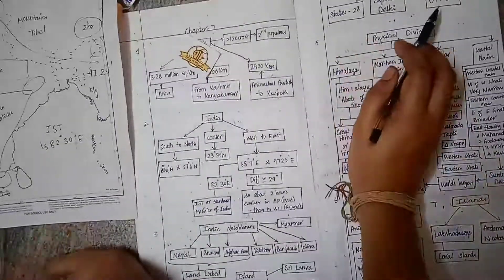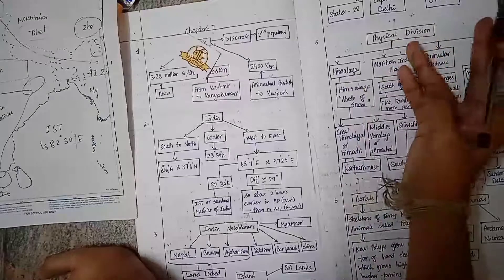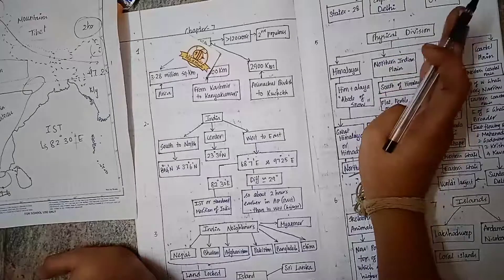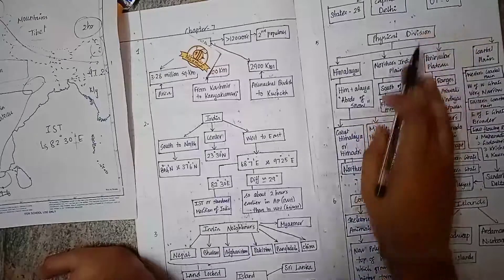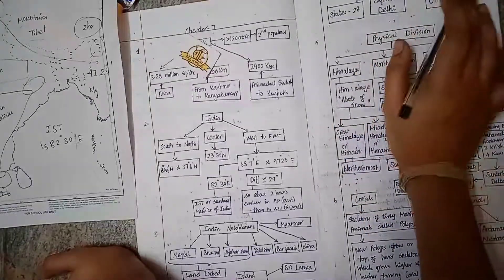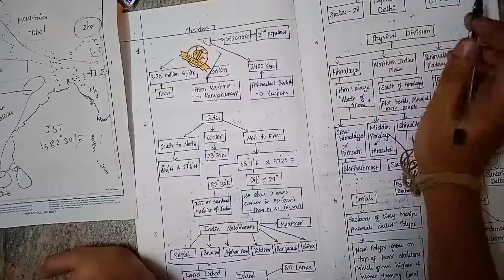India has 28 states and 8 union territories: Jammu and Kashmir, Ladakh, Puducherry, Delhi, Lakshadweep, and Andaman and Nicobar. The capital of India is Delhi.